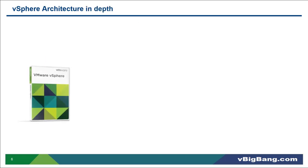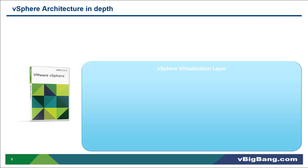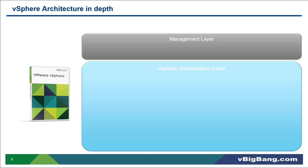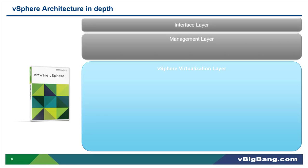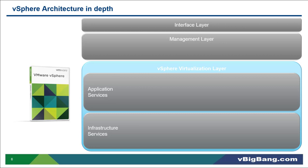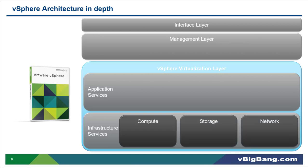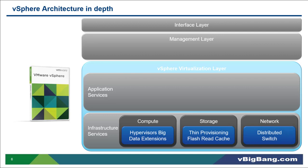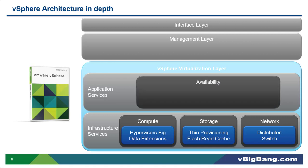Let's look at vSphere architecture in depth. It has three main components: the vSphere virtualization layer, management layer and interface layer. In the vSphere virtualization layer, we have infrastructure services and application services. Infrastructure services contains compute, storage and network resources and they have some main duties to run your vSphere on your data center. In the application services layer, we have services that provide availability — for example, high availability, fault tolerance, vMotion, storage vMotion and DRS.